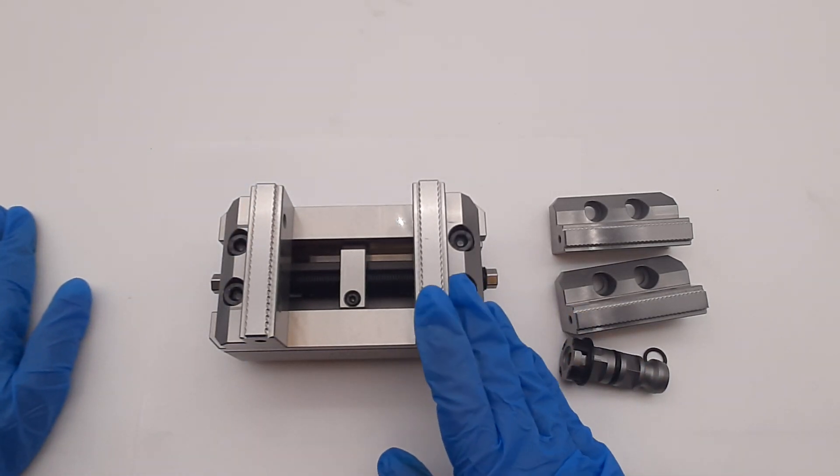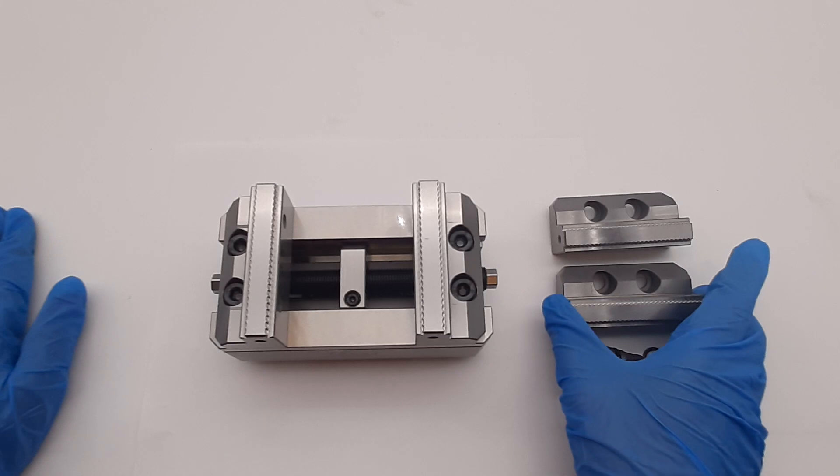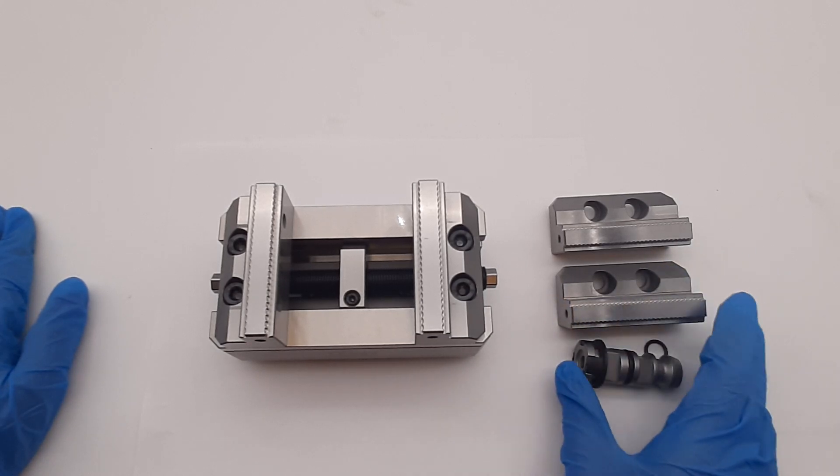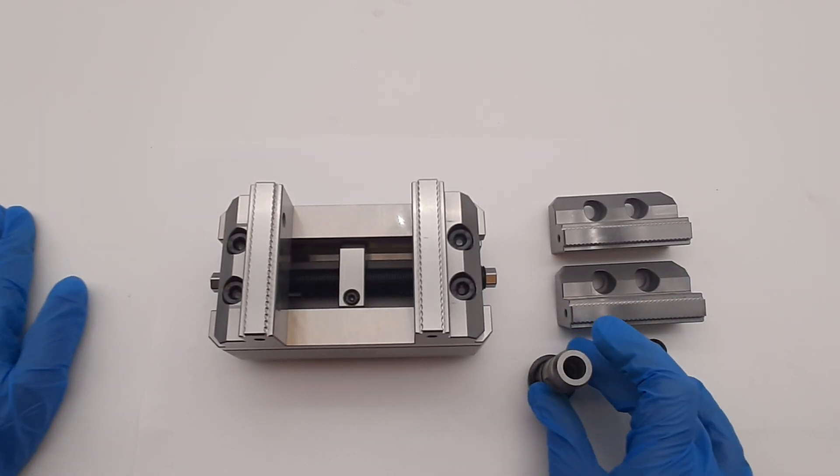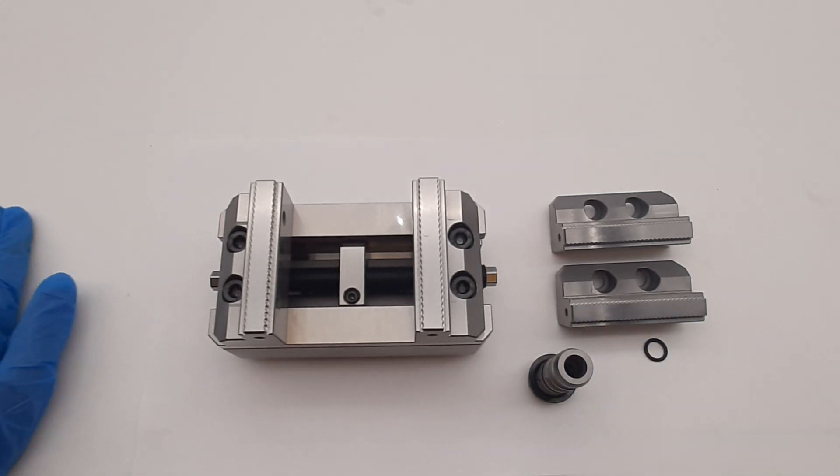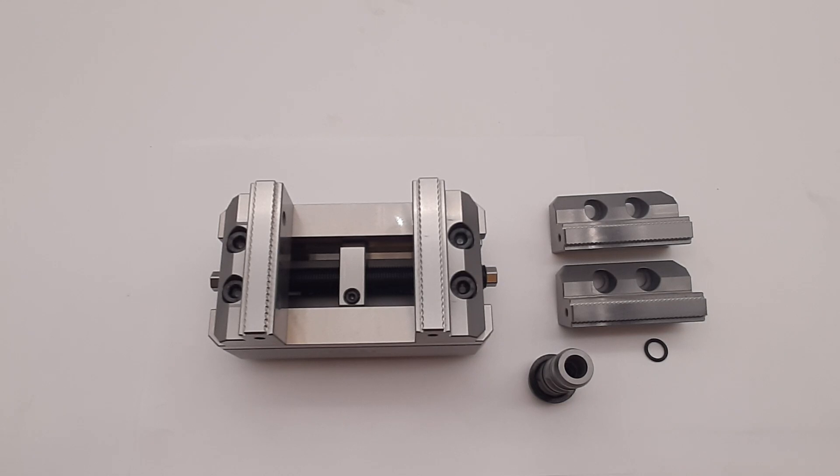This vise comes with an extra set of jaws with different serrations. The vise delivers with one piece of photo spigot. This particular piece and all sizes and models of Rapid Holding System self-centering vises are available on our website.